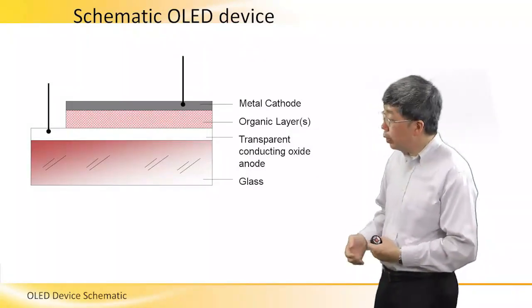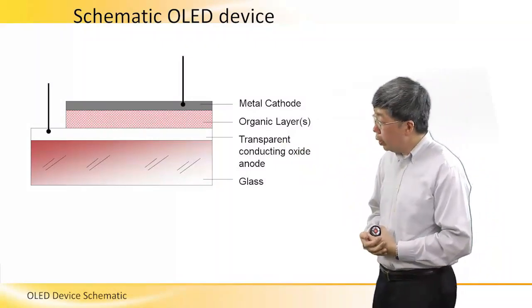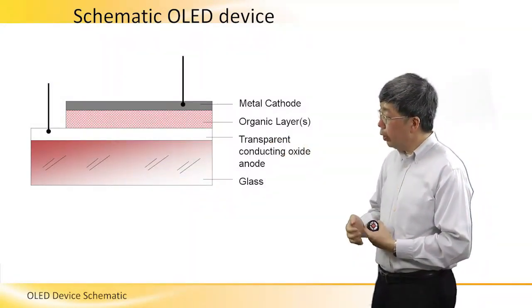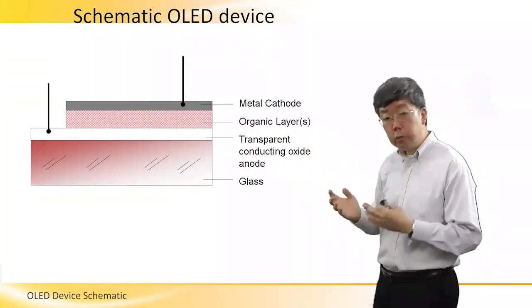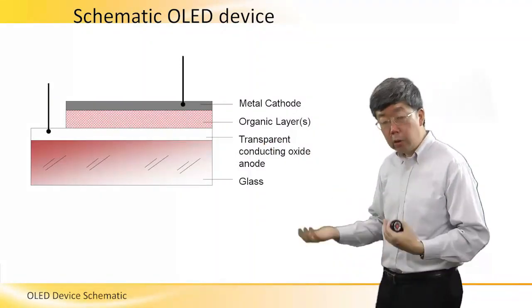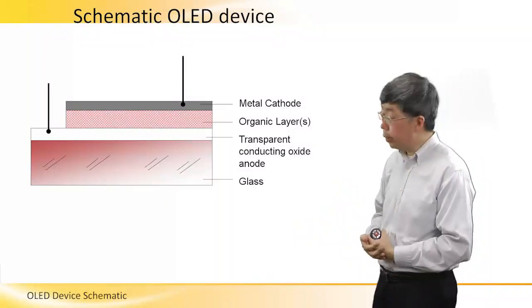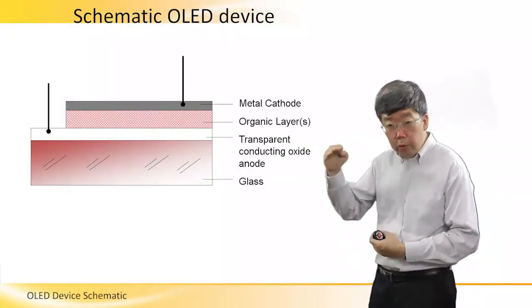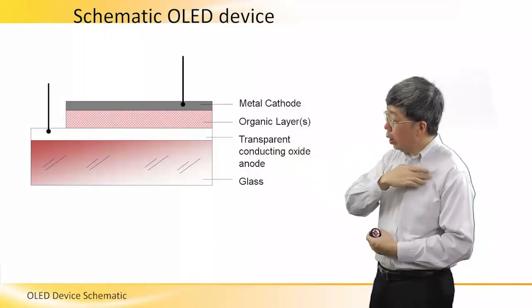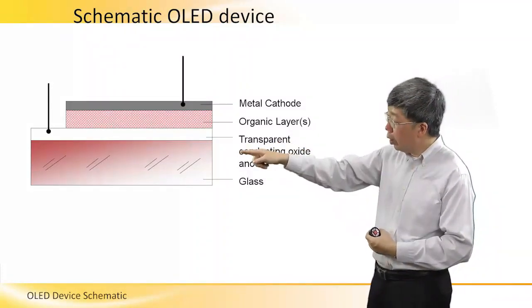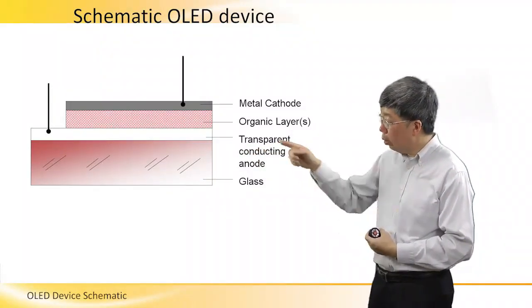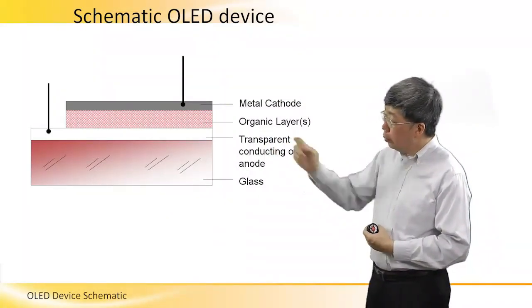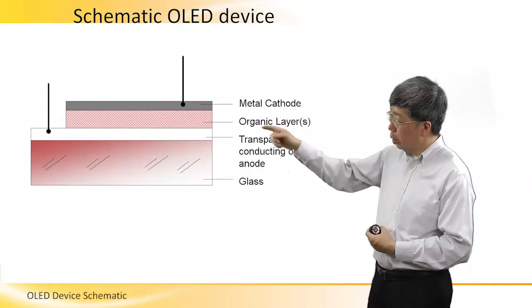As you can see here, the device consists of one or more organic layers. We will talk more about this on the subsequent slides. The organic layers are sandwiched between a transparent conducting oxide anode and a metal cathode at the top.